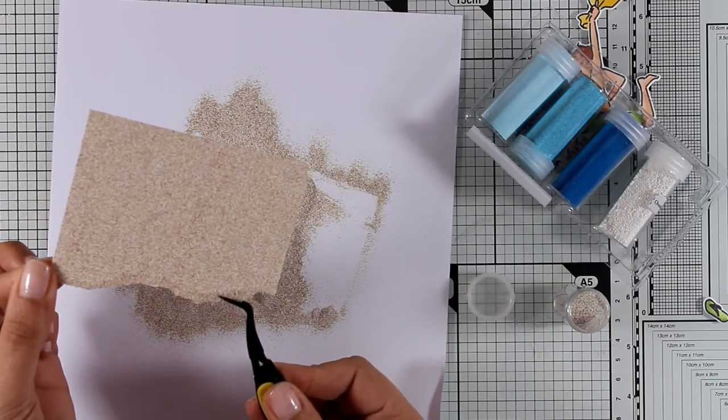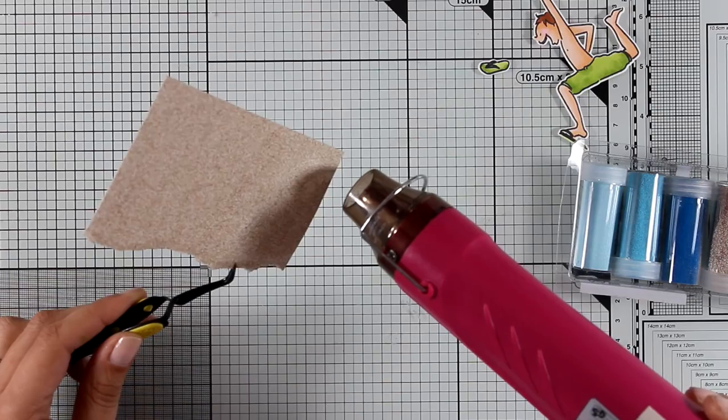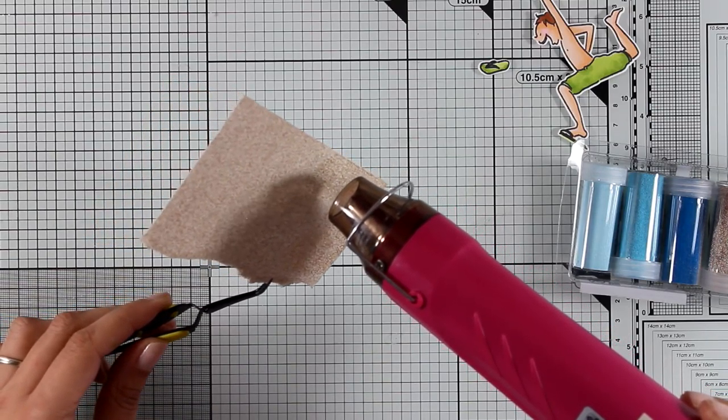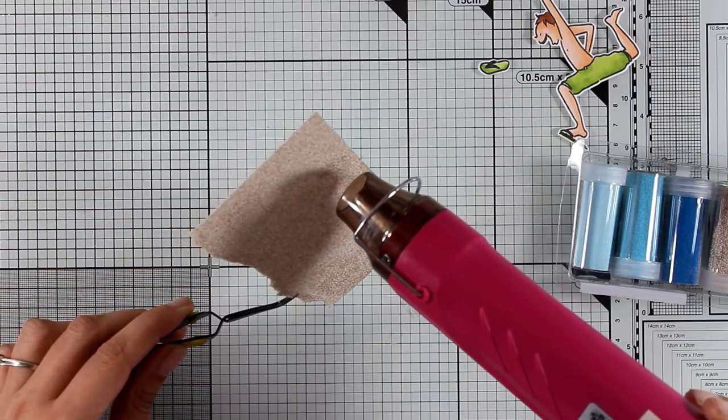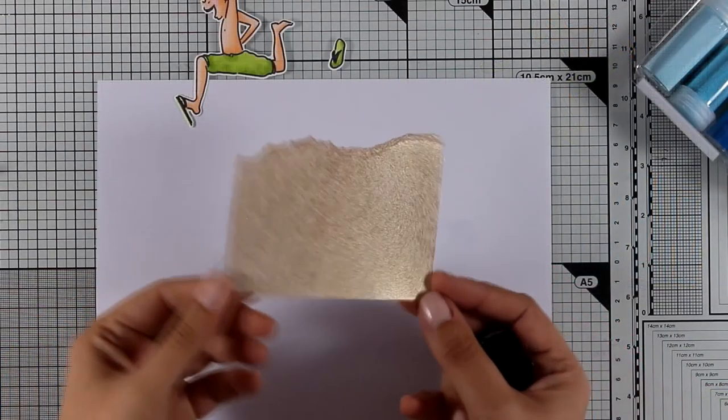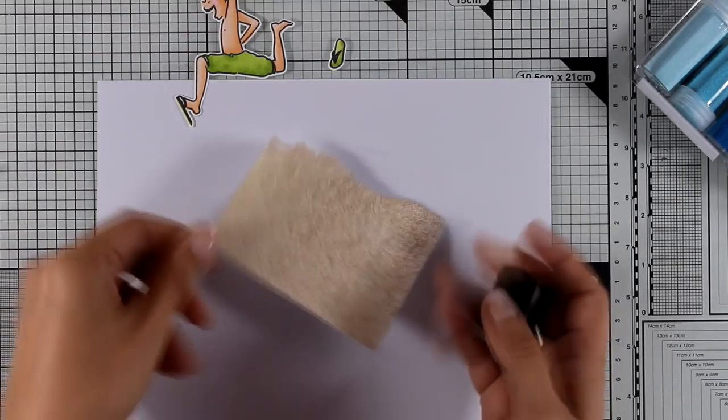I'm covering up completely this panel and now I'm going to use my heat gun to melt everything. This is fine embossing powder which means it sticks nicely on top of Versamark and you can emboss it from the top just like I'm doing here. My golden sand is ready.